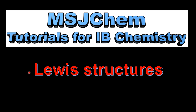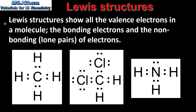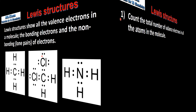This is MSJChem. In this video I'll be looking at Lewis structures. Lewis structures show all the valence electrons in a molecule — the bonding electrons and the non-bonding or lone pairs of electrons. Here we have three examples of Lewis structures. In Lewis structures the dots represent electrons; dots between atoms represent bonding electrons and dots around an atom represent non-bonding electrons.